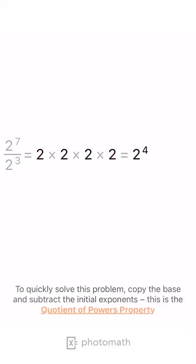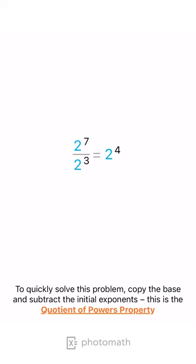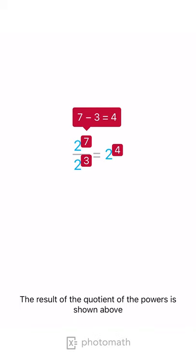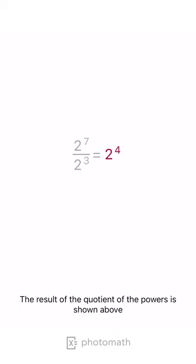To quickly solve this problem, copy the base and subtract the initial exponents. This is the quotient of powers property. The result of the quotient of the powers is as shown above.